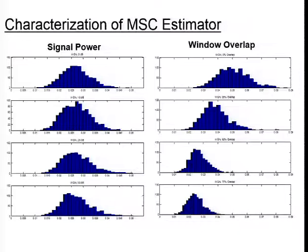First we see results of our estimator characterization using pairs of white Gaussian noise signals. Each of these eight plots represents 1,000 trials. The four plots on the left show the effects of signal power, and the plots on the right show the effects of window overlap. Looking at signal power — 0 dB, 10 dB, 25 dB, and 50 dB signals — we see that signal power doesn't have a large effect on the bias and variance of our estimator.